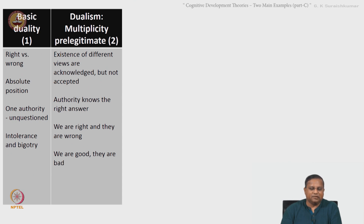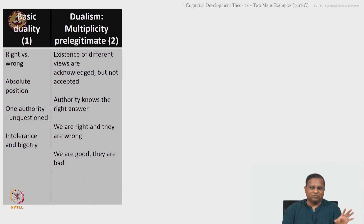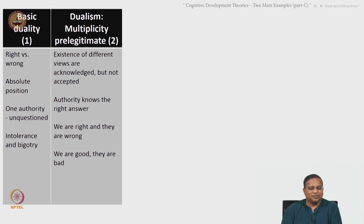Dualism, multiplicity pre-legitimate is the second stage, where the existence of different views is acknowledged but not accepted. Authority knows the right answer is the predominant thinking there — we are right, they are wrong; we are good, they are bad. You could relate this to what is happening in the world and understand where we are on that side.